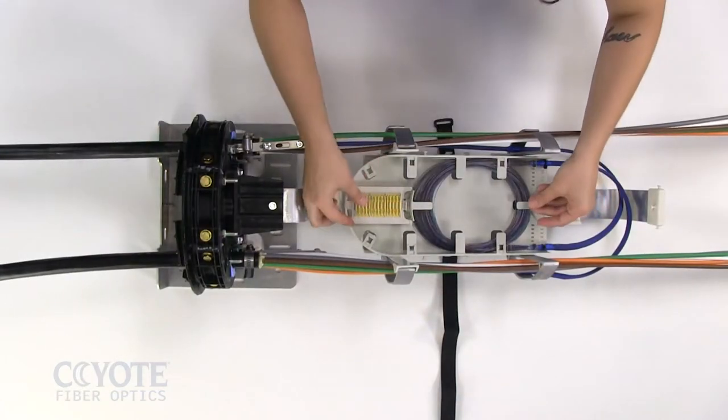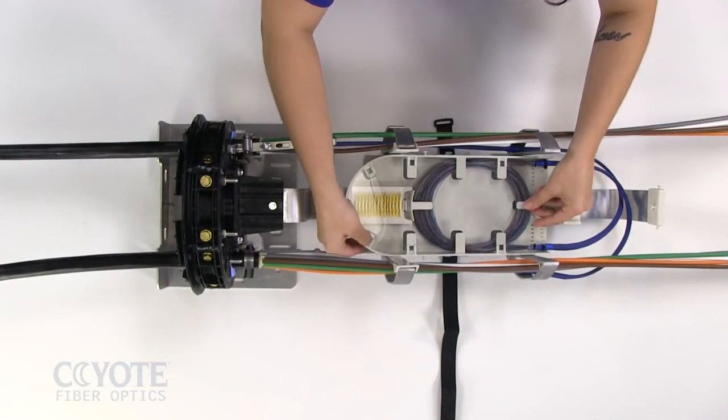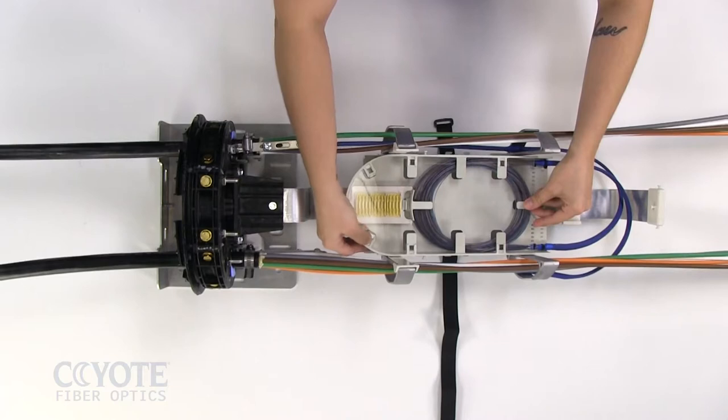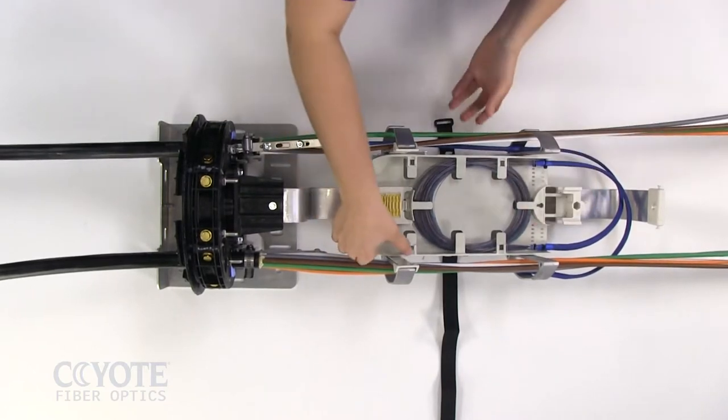Install the splice tray cover onto the splice tray by pressing it into the six cover retention tabs located on the perimeter of the tray.